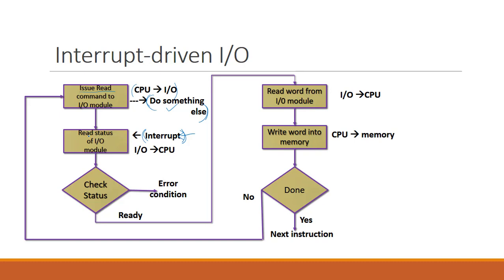On the interrupt, the CPU reads the status from the I/O module. The status is sent from the I/O module to the CPU along with the interrupt. The CPU checks the status, and if it is ready, it reads the word from the input-output module and then stores it into memory. You can notice that there is no not-ready signal here. This is because the peripheral device sends an interrupt only when it is ready, so there is no need for a not-ready signal. This is how interrupt-driven I/O works.